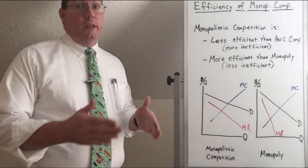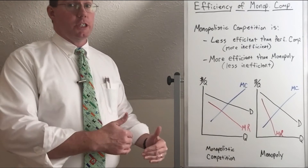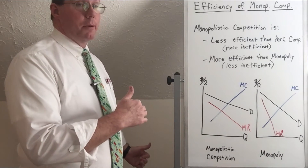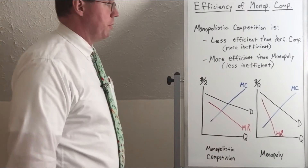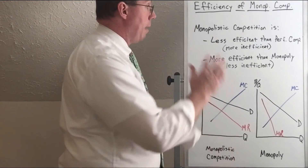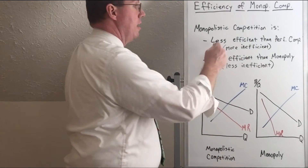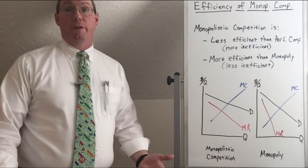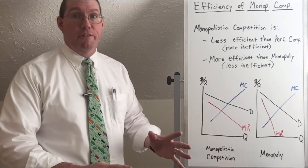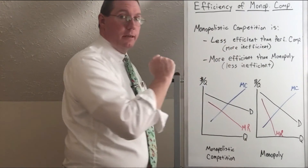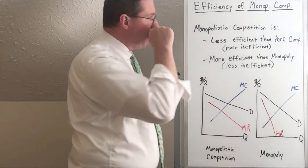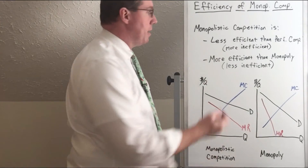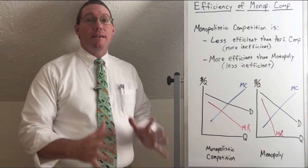Now I want to make a comparison between monopolistic competition and monopoly. We previously saw a comparison between monopolistic competition and perfect competition — monopolistic competition is less efficient than perfect competition, or another way of saying it is that it is more inefficient. When it comes to economic inefficiency, monopolistic competition has more of that problem than perfect competition. But when we compare monopolistic competition to monopoly, monopolistic competition is actually more efficient than monopoly — or less inefficient. Monopoly has the most inefficiency.